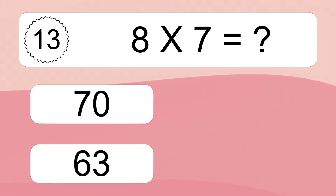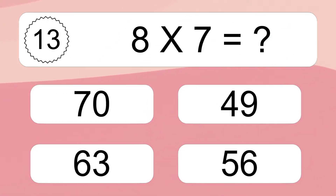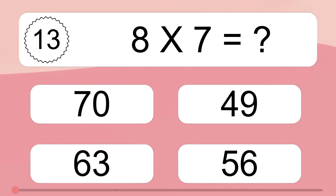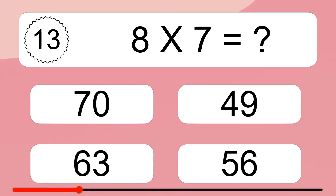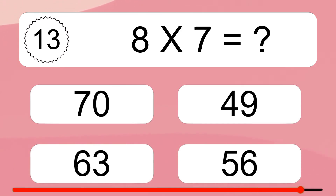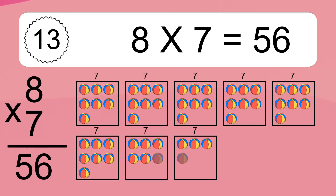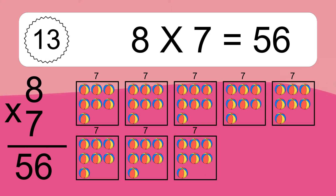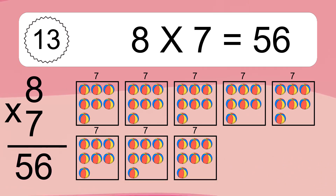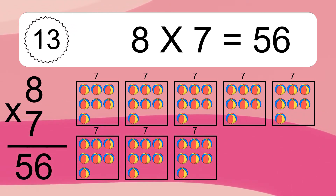8 times 7 equals what? 8 times 7 equals 56. We have 8 boxes, and each box has 7 colorful balls inside. If you count all the balls in all the boxes together, you will have 8 times 7 balls. This equals 56 balls.